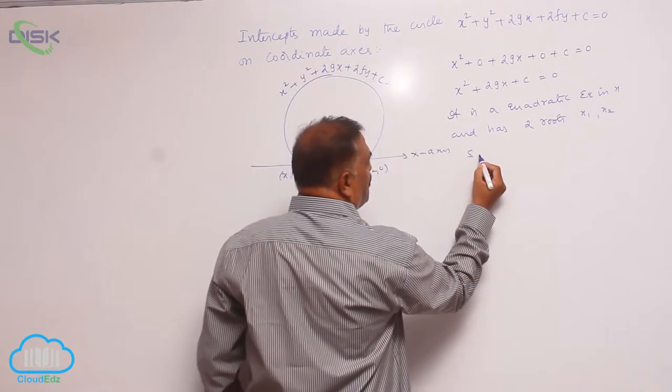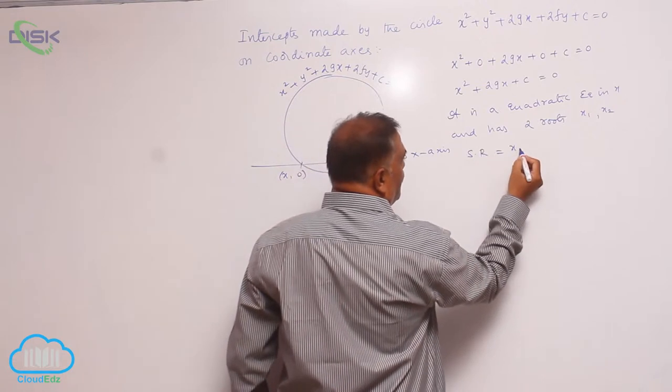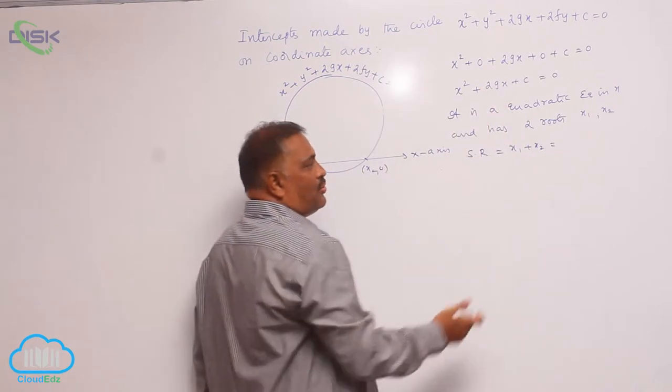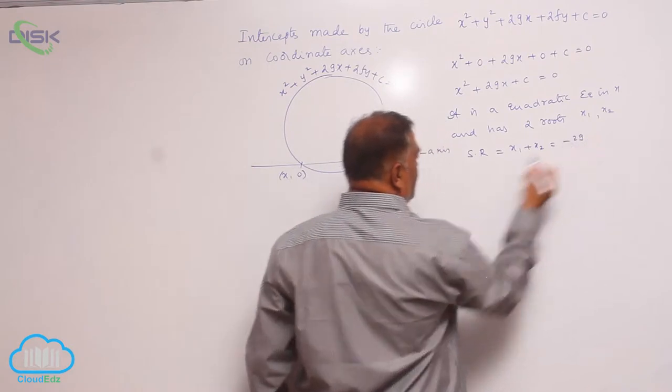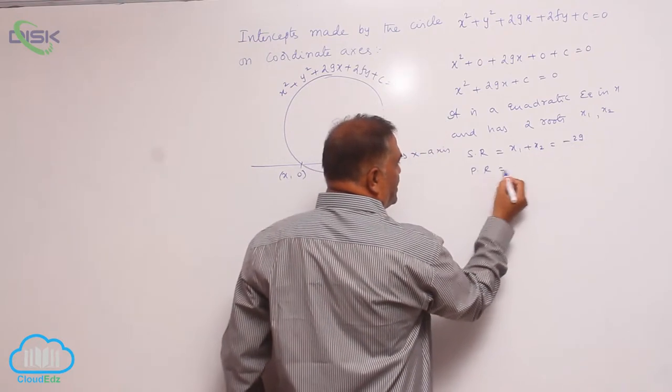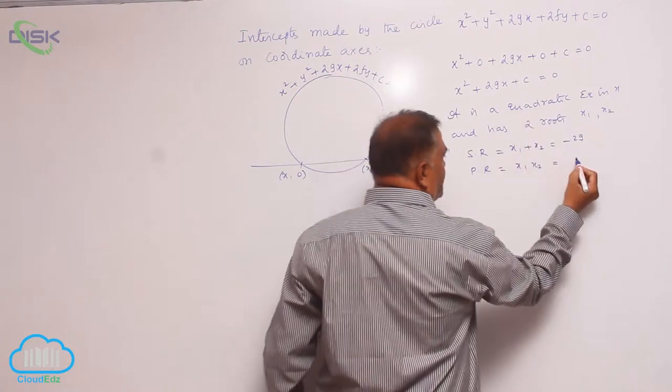The sum of roots is x₁ + x₂ = -2g, and the product of the roots is x₁·x₂ = c.